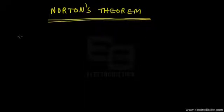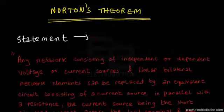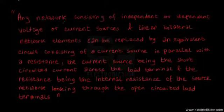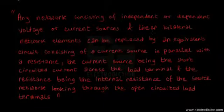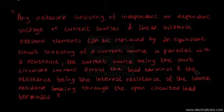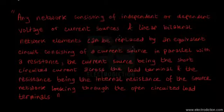The statement of Norton's theorem goes like this: any network consisting of independent or dependent voltage or current sources and linear bilateral network elements can be replaced by an equivalent circuit consisting of a current source in parallel with a resistance. The current source is the short-circuit current across the load terminal, and the resistance is the internal resistance of the source network looking through the open-circuited load terminals.